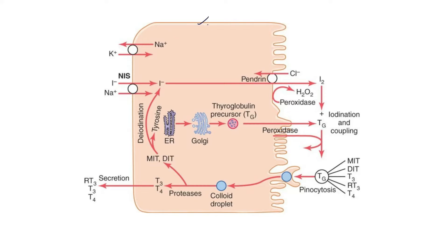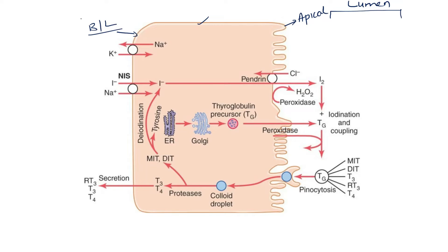The cell we are seeing is a follicular epithelial cell, which lines the follicles of the thyroid gland. This is the apical membrane of the epithelial cell, and this portion becomes the follicular lumen. This is the basolateral membrane, which is closely associated with the blood vessels or blood capillaries.